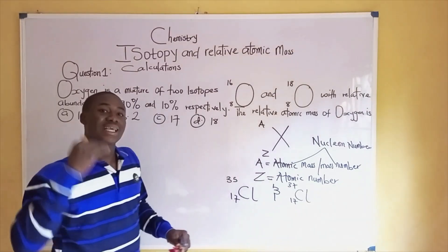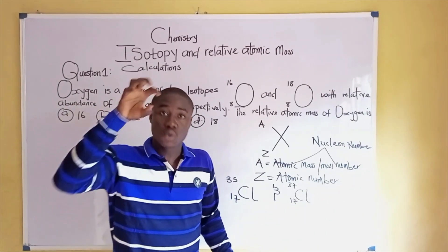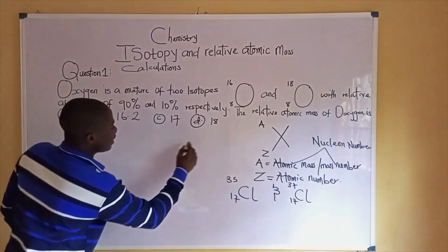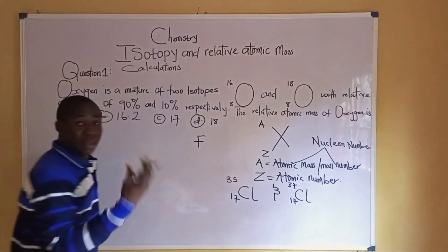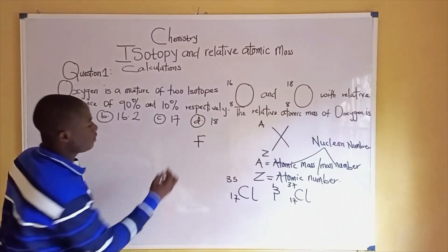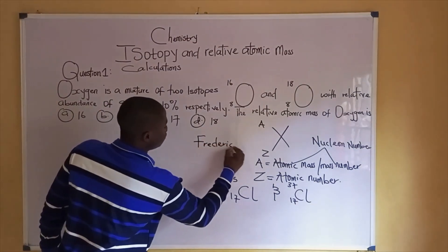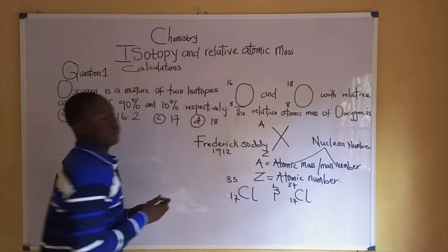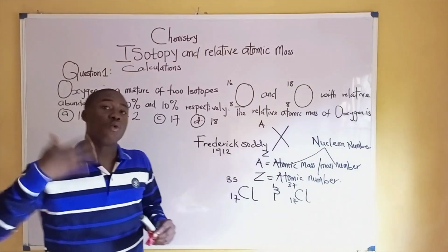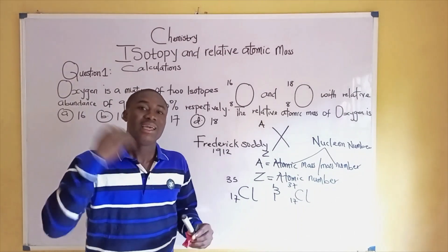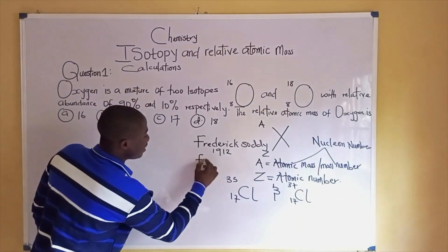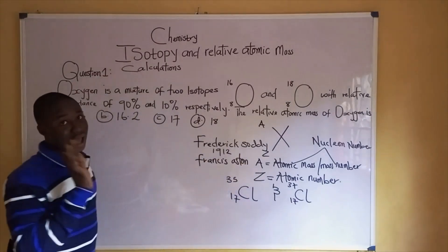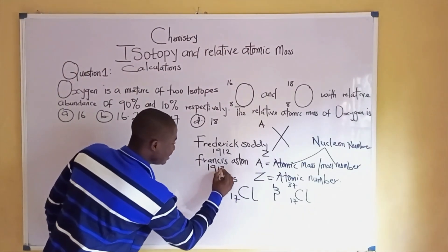The first hypothesis on isotopes was discovered by a man called Frederick Soddy in the year 1912. And this concept was rediscovered by a man a year later called Francis Armstrong in 1913.